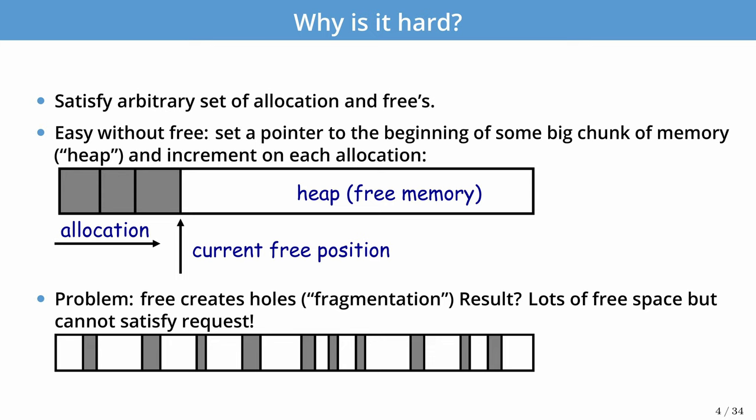The problem, as you can already see, is that every time you free things in this allocator, we're creating fragmentation — gaps of free space that maybe we can use in the future and maybe we can't. Over time, it can be very difficult to satisfy memory requests if we end up with lots and lots of fragmentation.